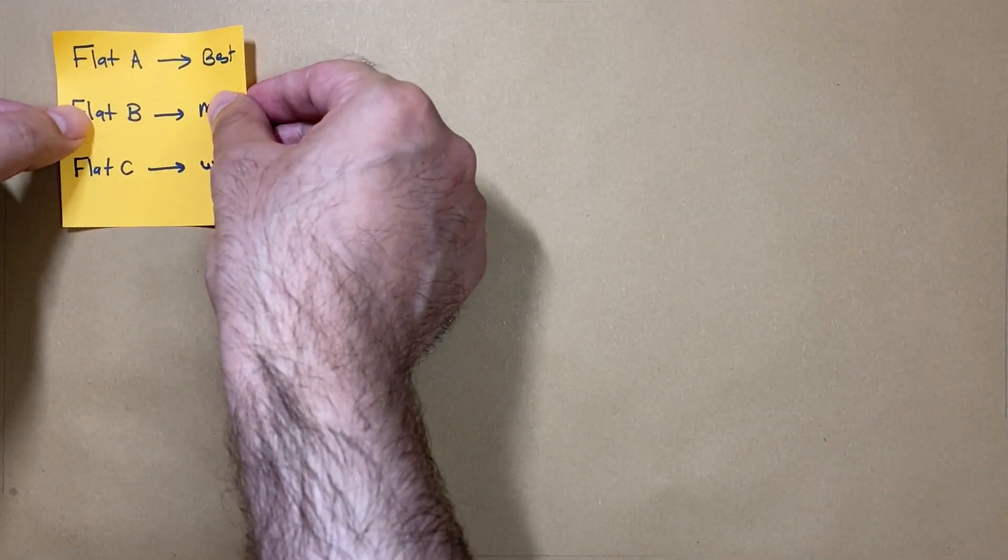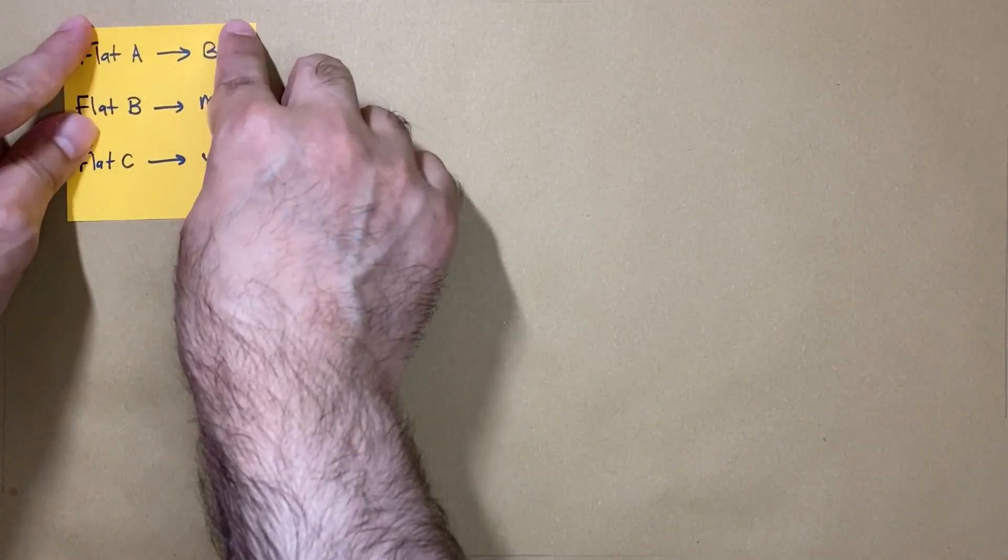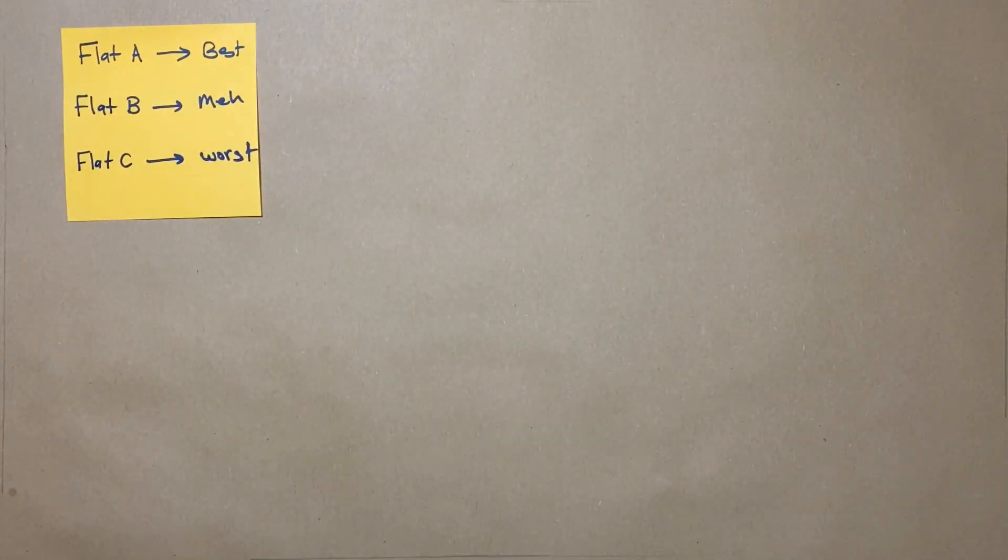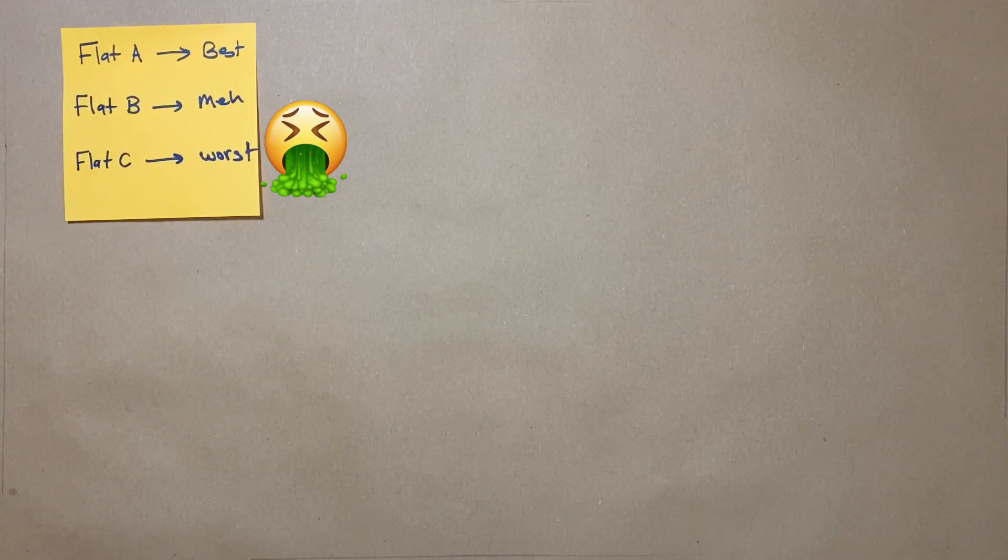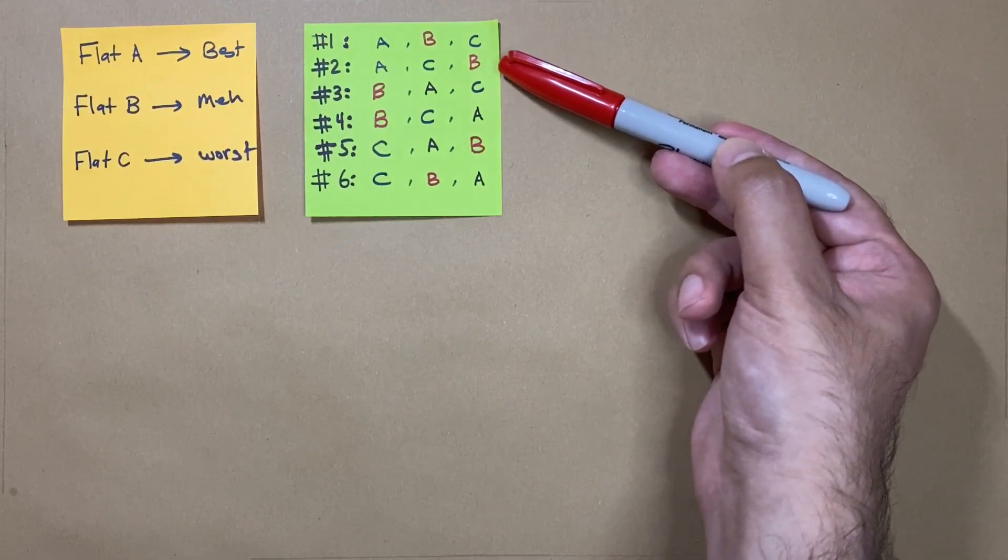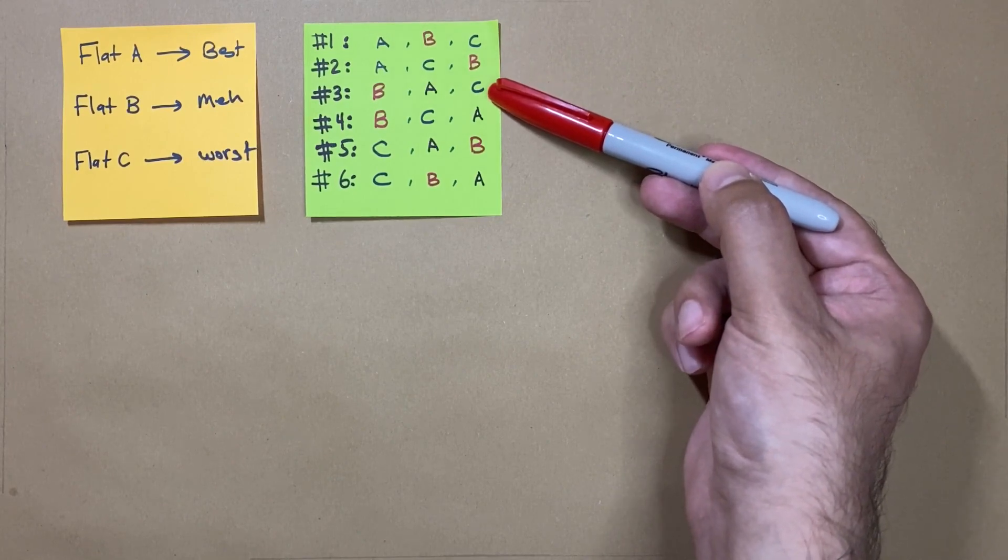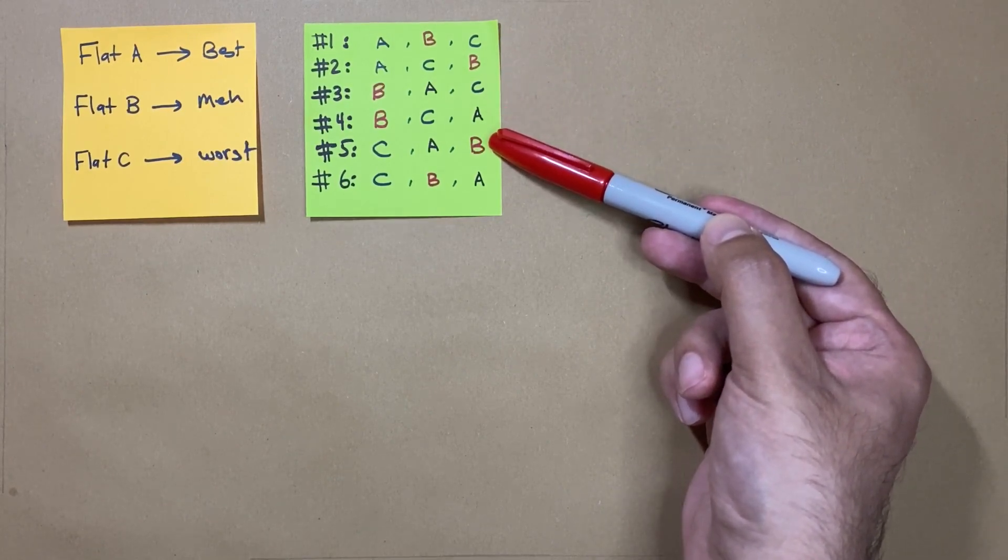Let's assume that Ted has three flats to choose from: flat A, B, and C, with flat A being the best and flat C the worst option. These flats can be presented in six different orders, making the decision process intriguing and challenging.